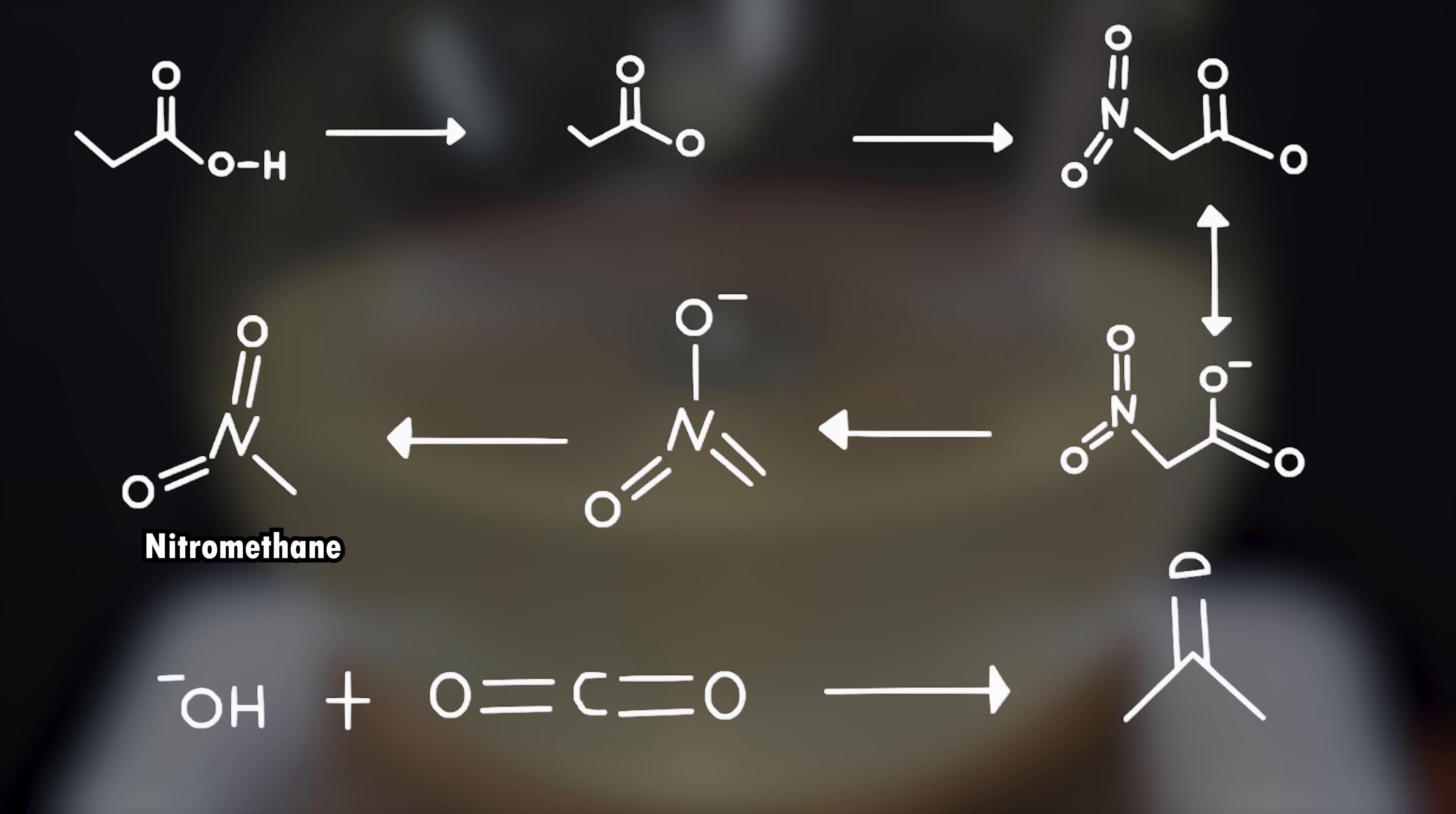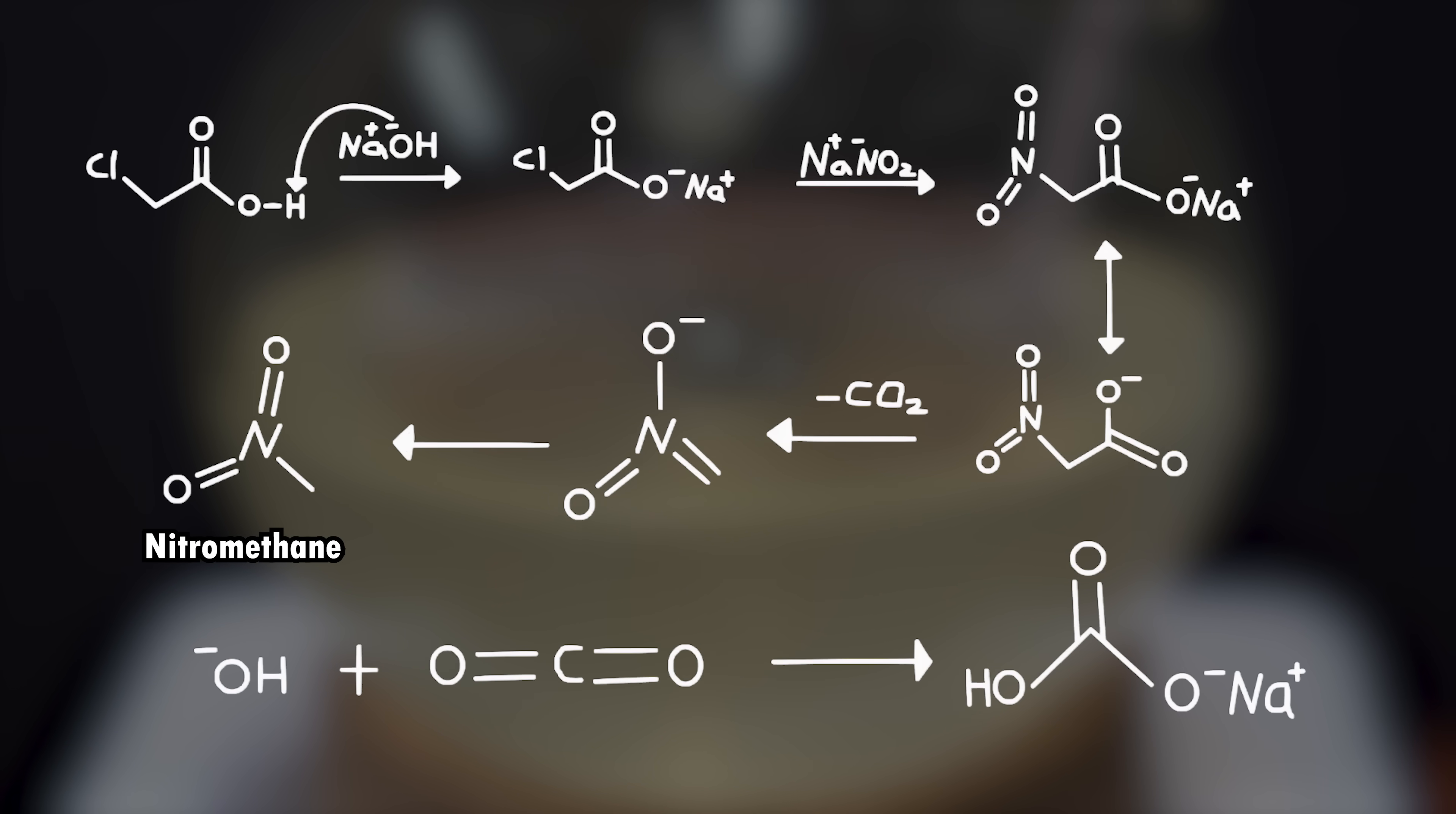The reaction first starts by making the solution basic, so nitrous acid isn't produced, which would happen if the carboxylic acid wasn't neutralized. Then a SN2 reaction between the nitrite anion and chlorine as a leaving group. This produces sodium nitroacetate. Then we have a decomposition of sodium nitroacetate, which liberates CO2 and nitromethane. A major byproduct is sodium bicarbonate, which hydroxide and carbon dioxide react to form it.